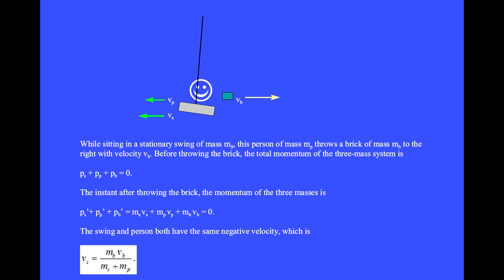The instant after throwing the brick, the momentum of the three masses is the mass of the swing times its velocity, plus the mass of the person times their velocity, plus the mass of the brick times the velocity of the brick. To match the initial zero momentum, these three vectors must add up to zero. The swing and person both have the same negative velocity, while the brick is moving rightward with positive momentum. Given the masses and velocity of the brick, we can solve for the velocity of the swing.